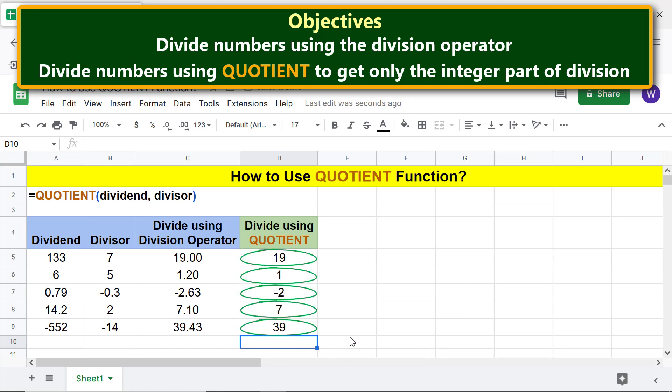There you go. Quotient has returned only the integer part of the result of the division operation.